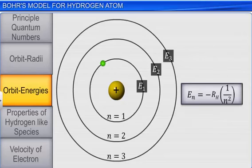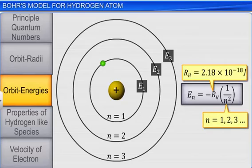Where n is the principal quantum number of the orbit and RH is Rydberg's constant, whose value is 2.18 multiplied by 10 raised to the power minus 18 joules. Energy of nth orbit of a hydrogen atom in electron volts is equal to minus 13.6 divided by n square.